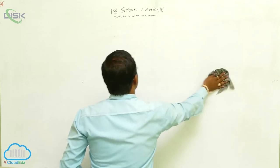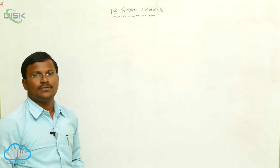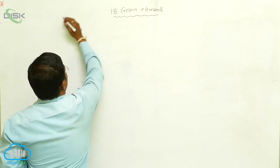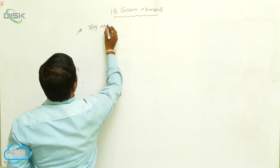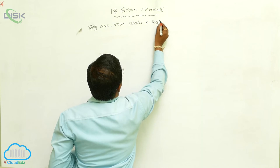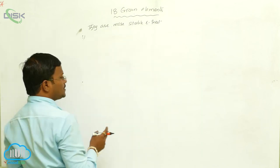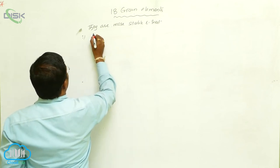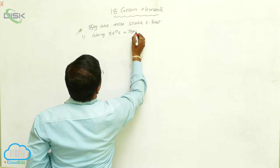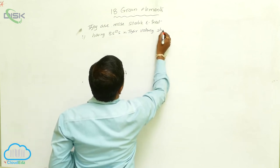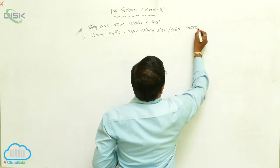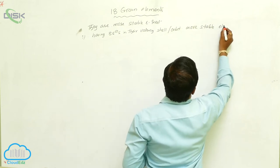All 18th group elements have a more stable electron configuration, so they never readily react with other elements — they are inert. They are more stable and inert. Why are they more stable? It is explained with two conditions. The first condition is having eight electrons in the valency shell or orbit, which gives a more stable electron configuration.